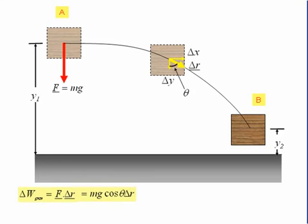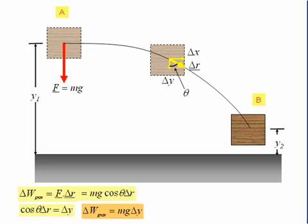But just looking at the diagram, cos theta times delta R is equal to delta Y. So therefore, the work done is equal to mg delta Y. And this is the same as though the body had been displaced straight down by delta Y.